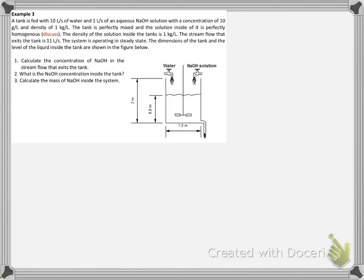Example 3. A tank is fed with 10 liters per second of water and 1 liter per second of an aqueous solution of sodium hydroxide with a concentration of 10 grams per liter and density of 1 kilogram per liter. The tank is perfectly mixed and the solution inside is perfectly homogeneous. The density of the solution inside the tank is 1 kilogram per liter. The stream flow that exits the tank is 11 liters per second. The system is operating in steady state. The dimensions of the tank and the level of the liquid inside the tank are shown in the figure below.